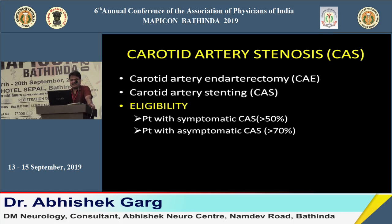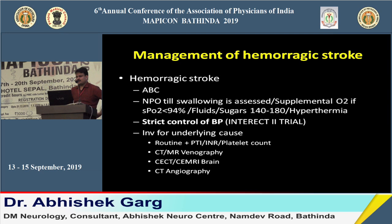For hemorrhagic stroke: the only proven treatment for hypertensive bleed is control of blood pressure. All other investigations aim to find the etiology. If the etiology is hypertension, just control BP — rest is supportive. Evaluate for underlying vascular malformations or aneurysm and treat accordingly.